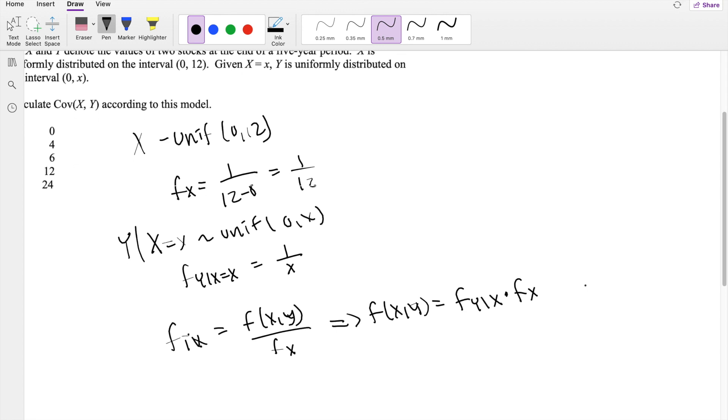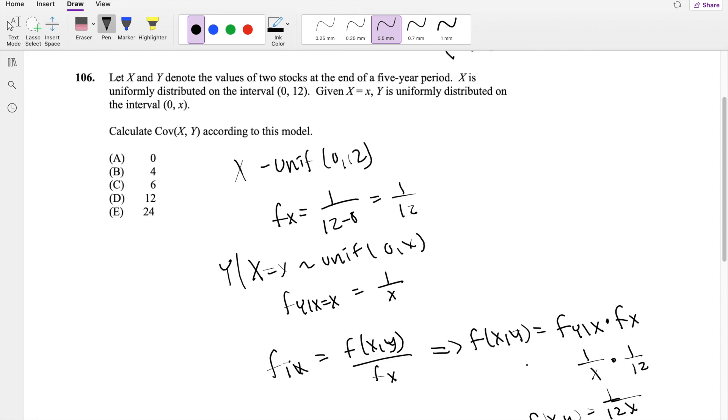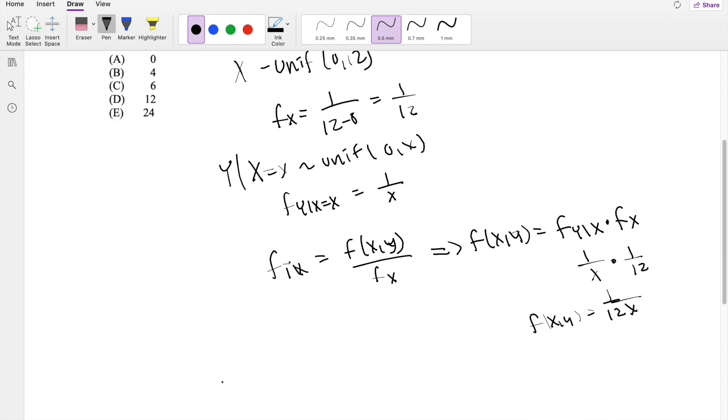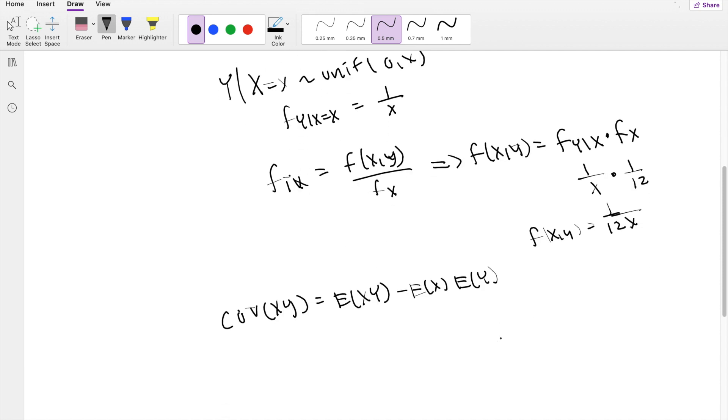So that means when f of Y given X is equal to 1 over x and f of X is equal to 1 over 12, then f of X comma Y must be equal to 1 over 12x. And then this becomes not a very hard problem because we know the covariance formula. If you don't have this memorized, make sure you do. Covariance of X, Y is just equal to the expectation of XY minus the expectation of X times the expectation of Y.